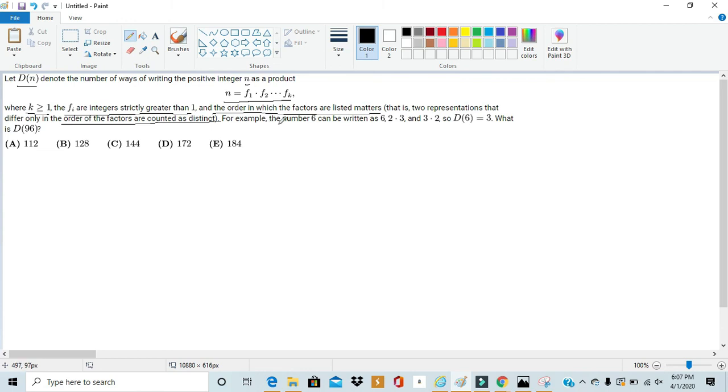That is, two representations that differ only in the order of their factors are counted as distinct. For example, the number 6 can be written as 6, 2 times 3, and 3 times 2, so d(6) is equal to 3. What is d(96)?